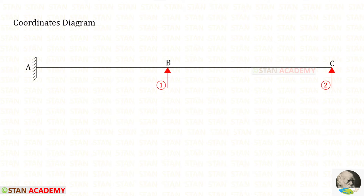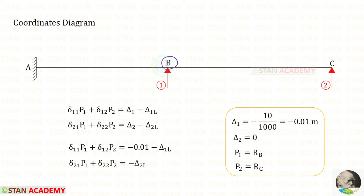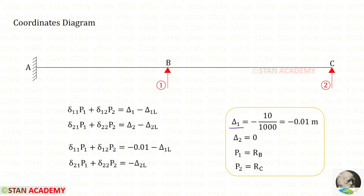Now let us draw the coordinates diagram. We keep RB as the first coordinate and RC as the second coordinate. These are the two equations to find RB and RC. The support at point B sinks by 10 millimeters, so delta 1 will be minus 10 millimeters, which is negative because sinking occurs downwards. Converting to meters, delta 1 equals minus 0.01 meters. At point C there is no settlement, so delta 2 will be 0.